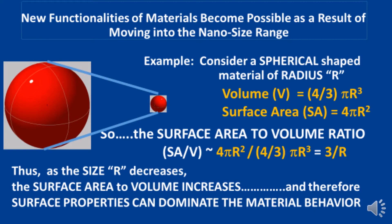New functionalities of materials become possible as a result of moving into the nano-sized range. For example, consider a spherically shaped material of radius r. The volume of the sphere is four-thirds pi r cubed. The surface area of the sphere is four pi r squared. So the surface area to volume ratio is proportional to one over the size of the sphere. That is, as the size of the sphere decreases, the surface area to volume increases and therefore surface properties can then dominate the material behavior.